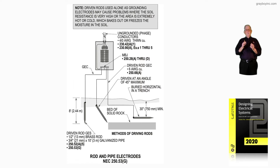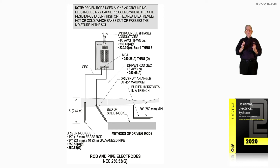If you read these sections very carefully — the two pointing toward the driven rod — the first is auxiliary grounding 250.54, then 250.4A5, then 250.121B. Then review 250.54 in conjunction with 250.50 and 250.53A2 exception, which says you do not have to have the 25-ohm or less reading on an auxiliary rod. You can, but you do not have to provide that.